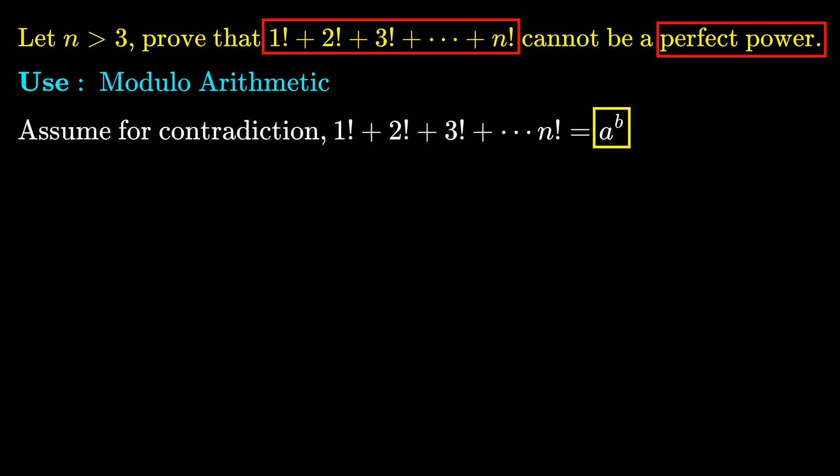Next, we move on to the case when b is odd. That is, the sum of first n factorials is an odd power. We will first deal with the case when n ≥ 9, and deal with smaller values of n later.